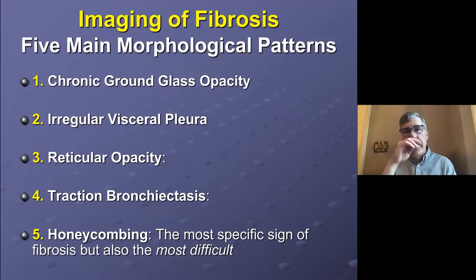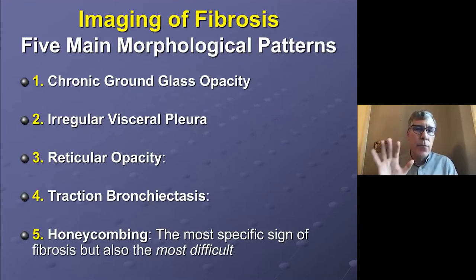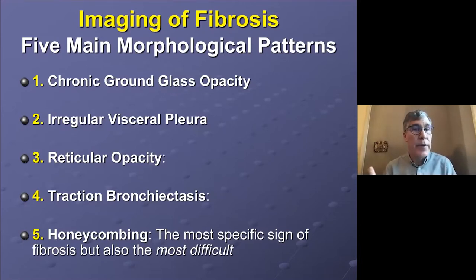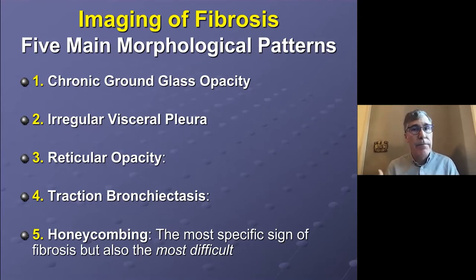The imaging evidence of fibrosis has five main morphologic appearances: chronic ground glass opacity, irregular visceral pleura, reticular opacity, traction bronchiectasis, and honeycombing.